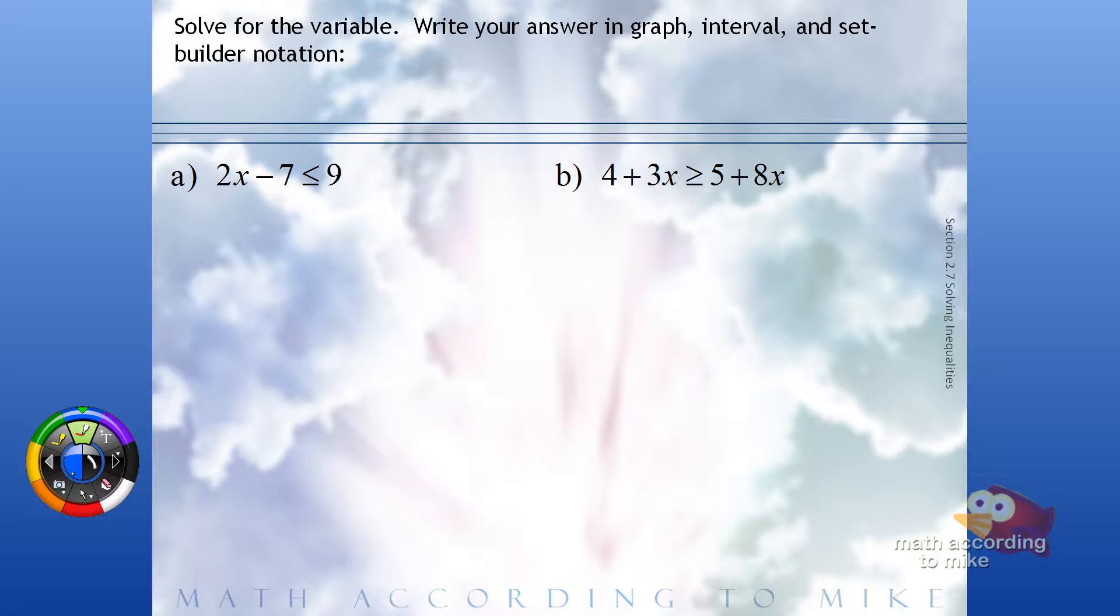So for the first one, working outside in, we're going to add 7 to both sides. Doing so, we get 2x is less than or equal to 16.